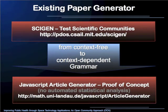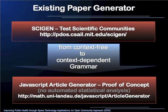The first thing to be done is moving from a random paper generator like SCIgen — which is used to test the scientific community — to a productive system that operates on grammar and can support scientists in paper generation. This means replacing the context-free grammar with a context-dependent grammar, giving us more flexibility in defining the paper structure.